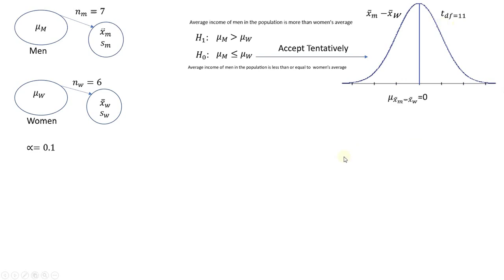If in the two populations the average income of men and average income of women is equal, then if we look at the sample differences, sometimes the difference between the average in the sample of men and the average in the sample of women would be positive, sometimes it will be negative.